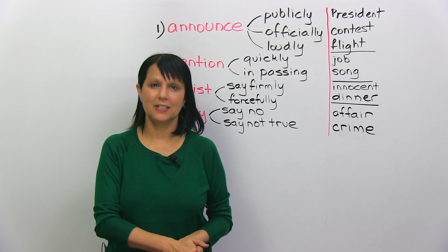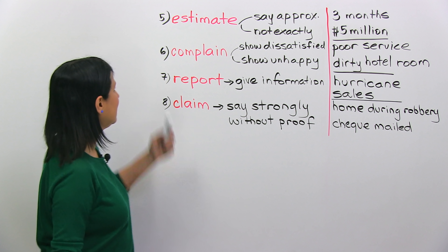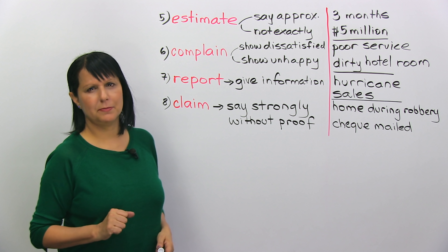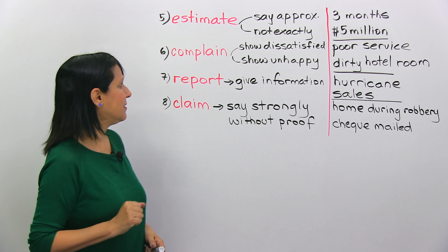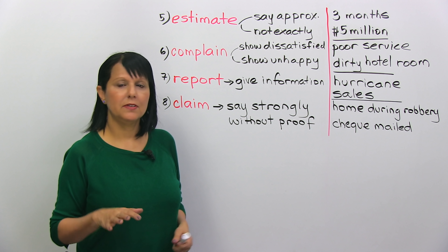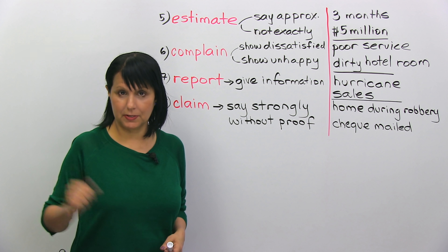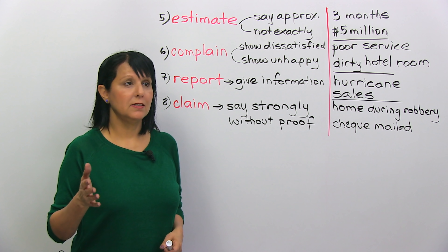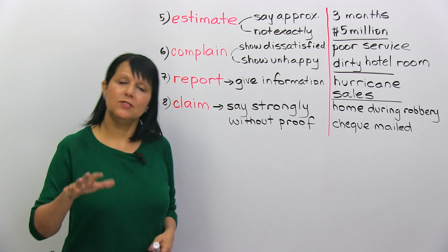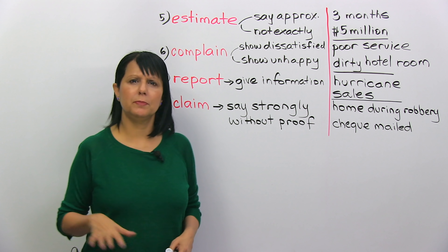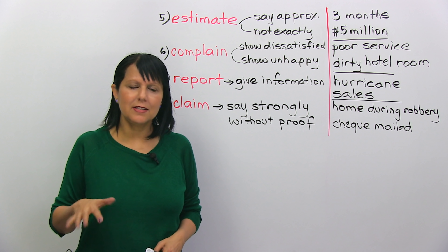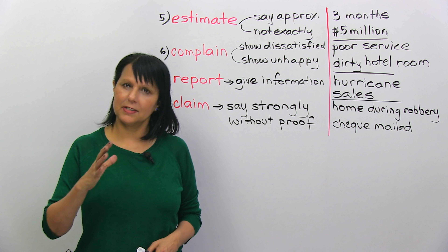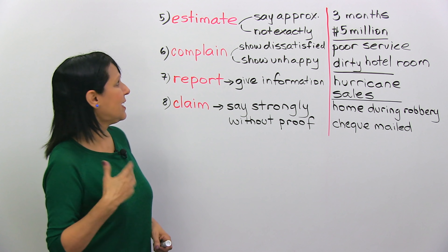Number five is 'estimate.' To estimate means to say approximately — roughly, not exactly. For example, they estimated it would take three months to finish the building, or they estimated the project would cost five million dollars. It's not a precise statement — it's a guess, an estimate. The visual you can use is a gesture that shows you're not exactly sure.